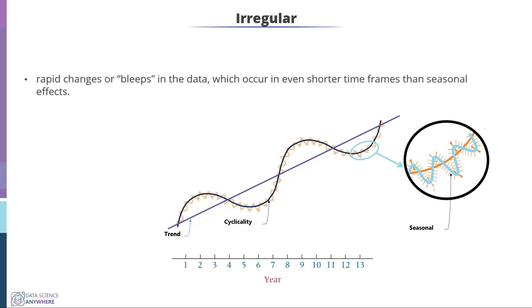And finally, irregular. Irregular is basically random and noisy behavior in the data, which has rapid changes and is even shorter than the seasonal effect.